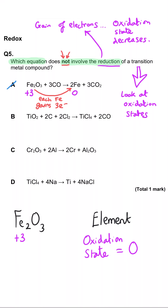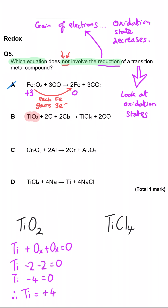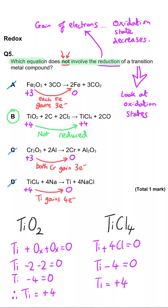In B, titanium oxide has two oxygens at minus 2 each, totalling minus 4, so titanium must be plus 4 at the beginning. In titanium chloride, four chlorines at minus 1 each means titanium is still plus 4 to cancel that out. So titanium is the same at the beginning and end — it has not been reduced — and so B is the correct answer.